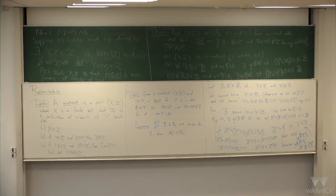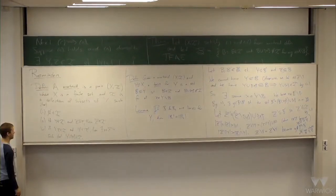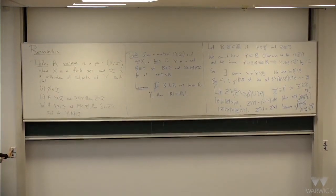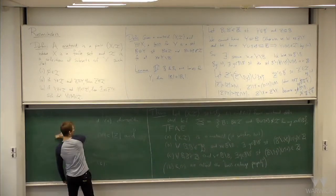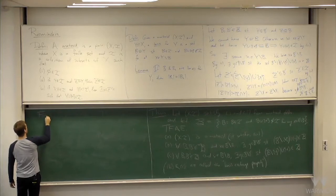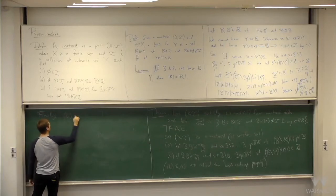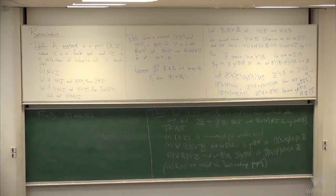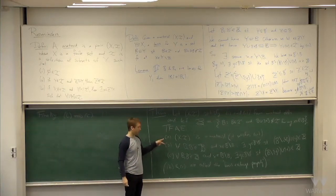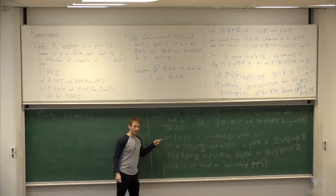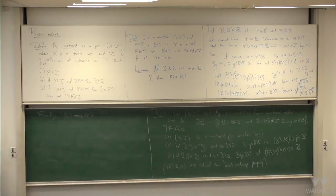So that one's a bit more technical. So now we've proved A implies B and C implies A. The last thing to do is prove B implies C. This is sort of sneaky — we're going to use the fact that we've already proved A implies B and C implies A, and we're going to do something involving taking complements.